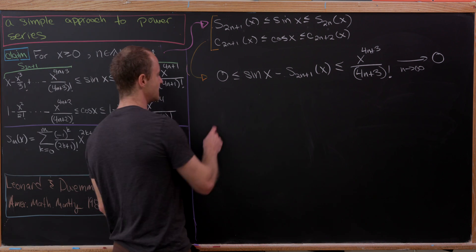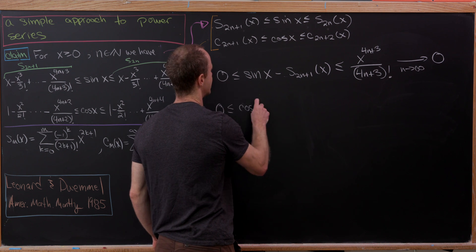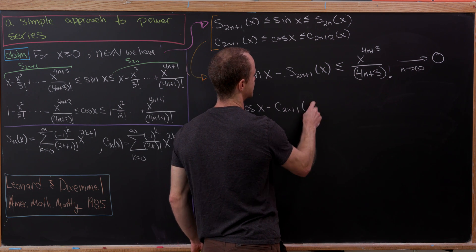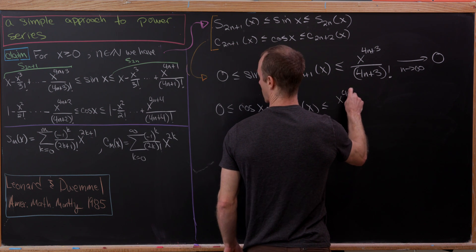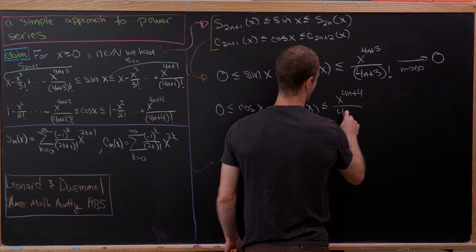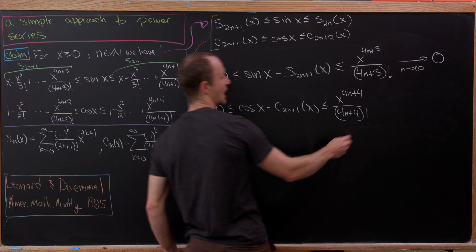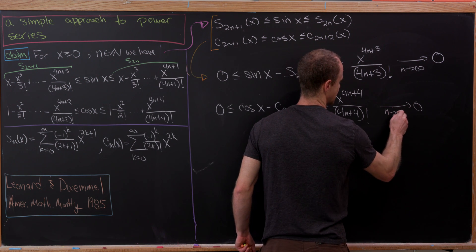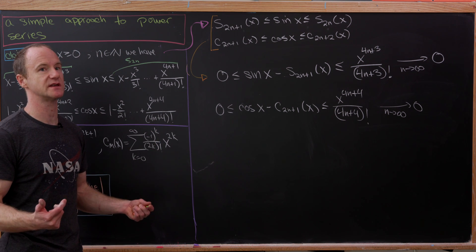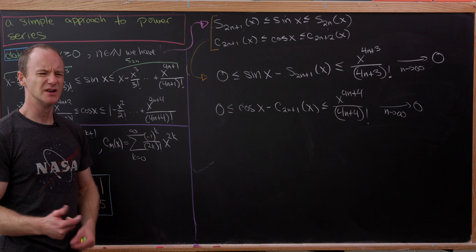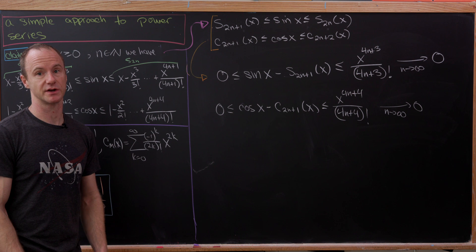The same argument applies to cosine: zero is less than or equal to cosine of x minus C sub (2n+1) of x, which is less than or equal to x to the (4n+4) over (4n+4) factorial. This also approaches zero as n approaches infinity, giving us the power series for cosine. So we have a clean approach not only to the power series but also to the remainder terms.